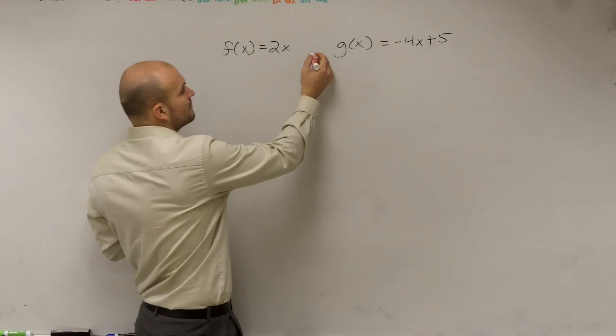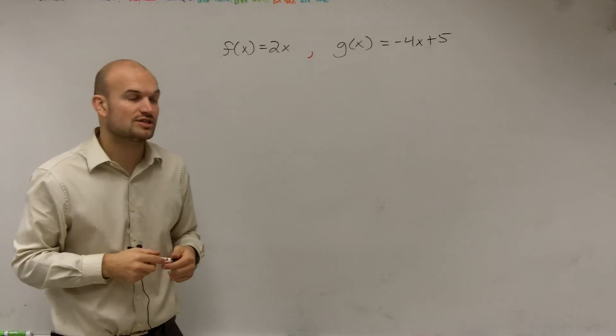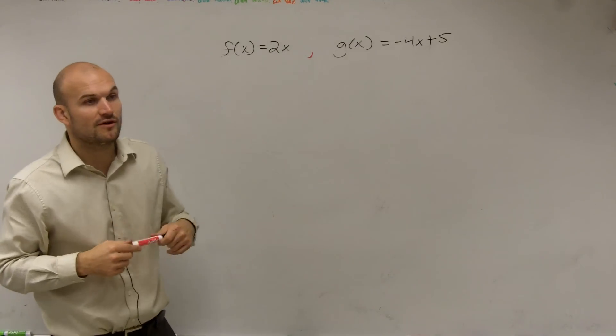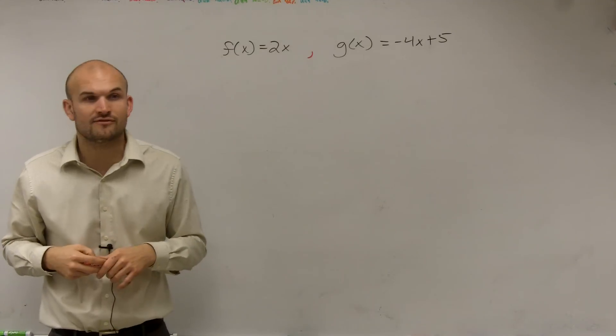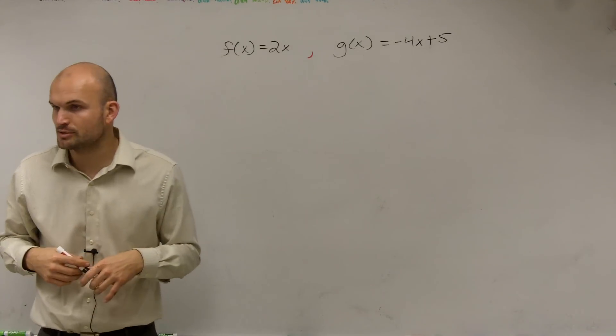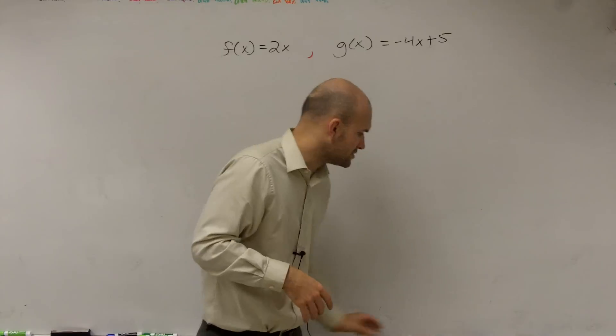Here we have two functions. We have f of x, which equals 2x, and the function g of x, which equals negative 4x plus 5. So I'm going to show you how to use our operations for functions.